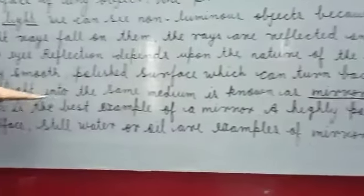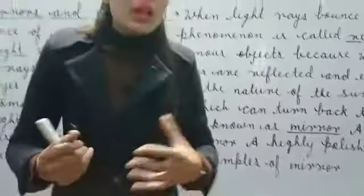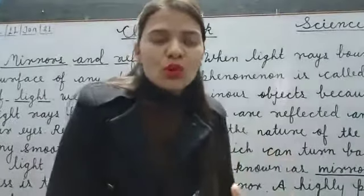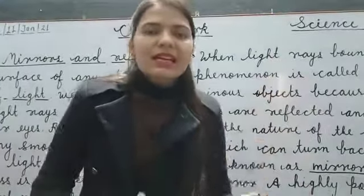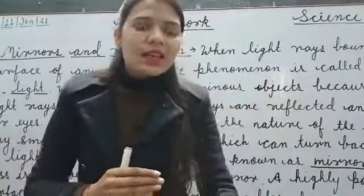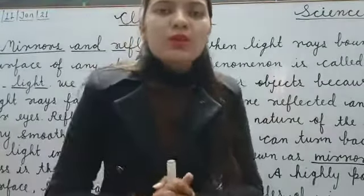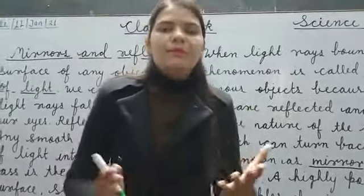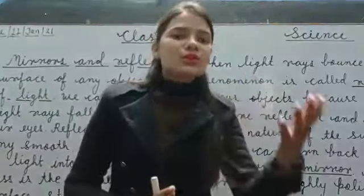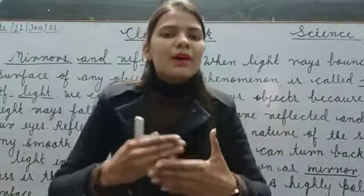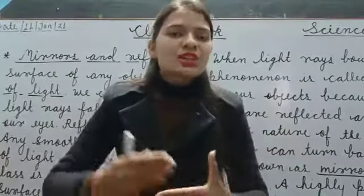Any smooth polished surface which can turn back the rays of light into the same medium is known as a mirror. A mirror is a smooth or polished surface jo aapke light ki ray ko turn back kar sakti hai. Usually we use a mirror to see our face — hum apne face ko dekhne ke liye mirror use karte hain. And what we see there is not us, that is a reflection of our face.